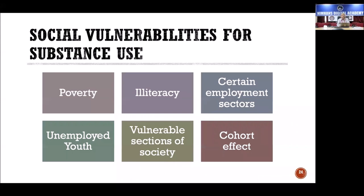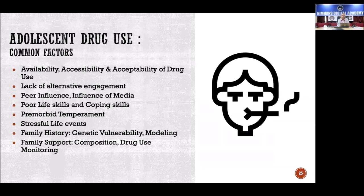Social vulnerabilities for substance use include poverty, illiteracy, employment sector — certain professions are more vulnerable — youth, the unemployed, and marginalized sections of society. For adolescents specifically, the case of the engineering student using cannabis is a good example: substances are easily available, and with the internet things are much more accessible regardless of location.